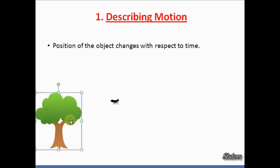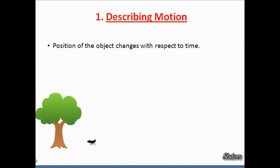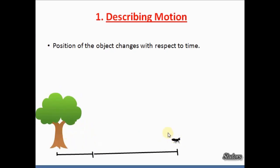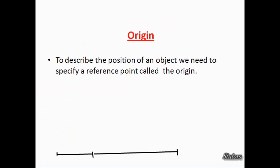Now imagine there was a tree somewhere here. With respect to the tree you can mark the position of the ant — you can measure the distance from the tree and mark its initial position. After some time, say the ant was somewhere else, you can mark the distance again and define its final position. So with respect to the tree you are marking the position of this ant, and this reference object is called the origin.